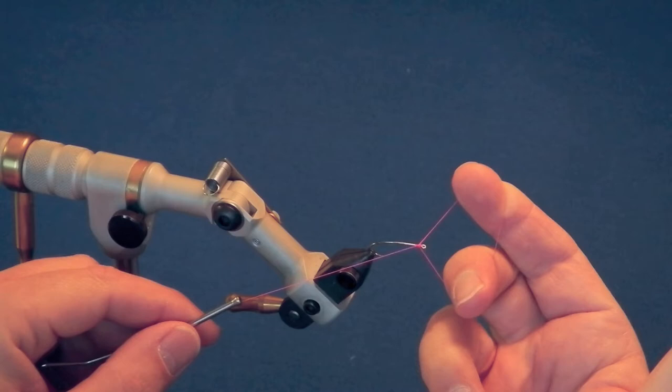The strand of thread from the hook shank to your index finger is what will wrap around the hook, trapping or whipping around the strand of thread that is coming from the bobbin.